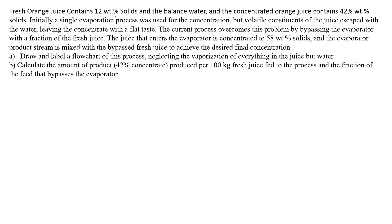Fresh orange juice contains 12.8% solids and the balance is water. The concentrated orange juice contains 42.8% solids. Initially, a single evaporation process was used for concentration, but volatile constituents of the juice escaped with the water, leaving the concentrate with a flat taste. The current process overcomes this problem by bypassing the evaporator with a fraction of fresh juice.